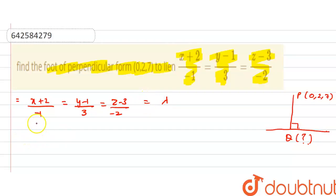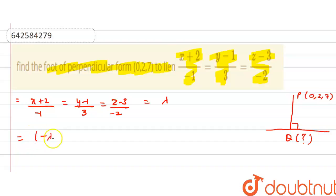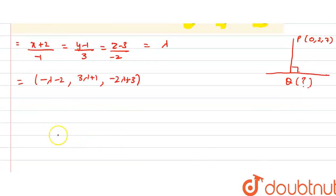So our point Q has coordinates: x equals minus lambda minus 2, y equals 3 lambda plus 1, and z equals minus 2 lambda plus 3. These are the coordinates of point Q on the line.